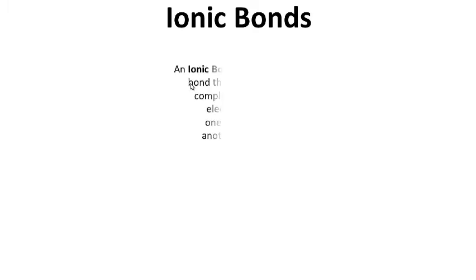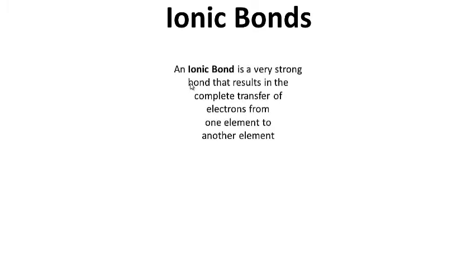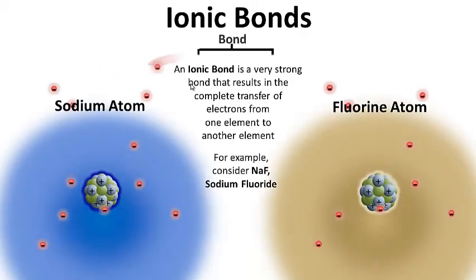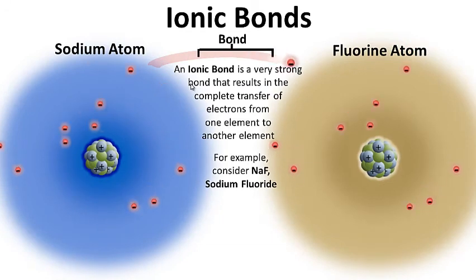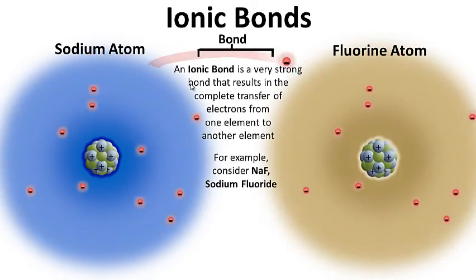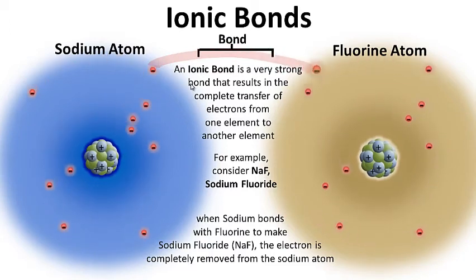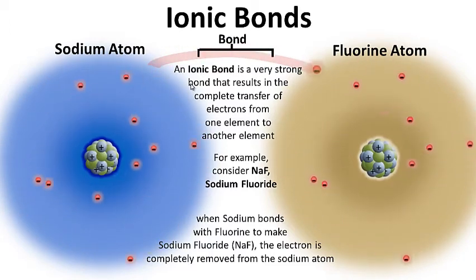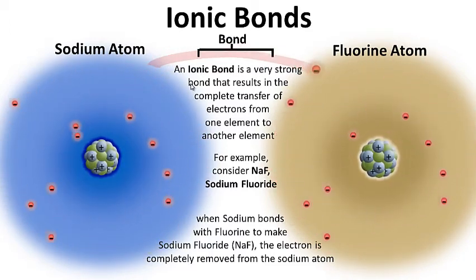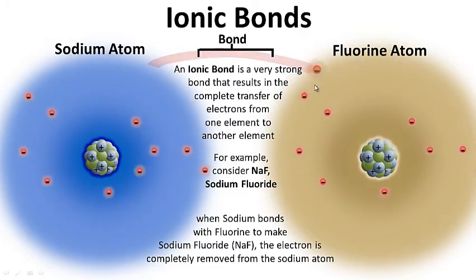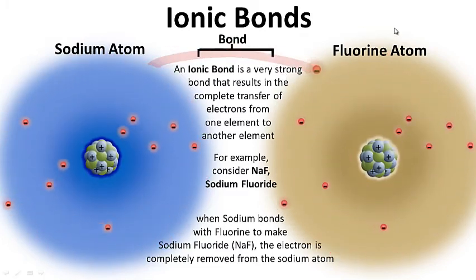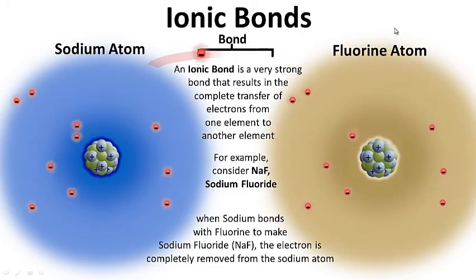The last type of bond we're going to talk about are ionic bonds. An ionic bond is a very strong bond that results in the complete transfer of electrons from one element to another element. For example, consider sodium fluoride — when sodium bonds with fluorine to make sodium fluoride, the electron is not shared but completely removed from the sodium atom over to the fluorine atom, to make an ionic bond.